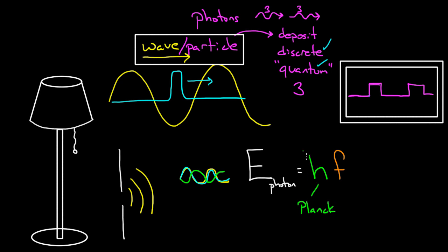So Planck's constant is extremely small. It's 6.626 times 10 to the negative 34th joule times seconds. 10 to the negative 34th. There aren't many other numbers in physics that small.